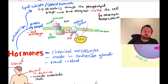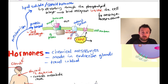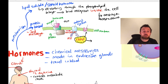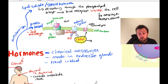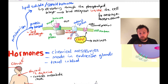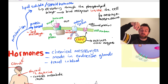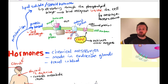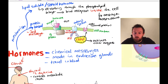Cyclic AMP can open channel proteins, allowing the influx of ions such as sodium. It can also activate other enzymes. Overall in this pathway, a hormone binding on the outside of the cell essentially triggers changes inside the cell, passing the message from outside to inside. Cyclic AMP is a very common second messenger.